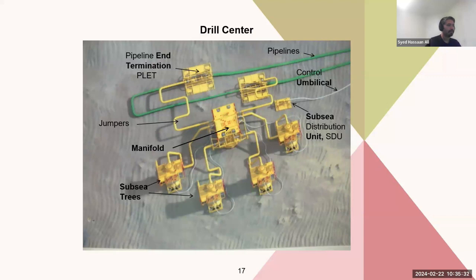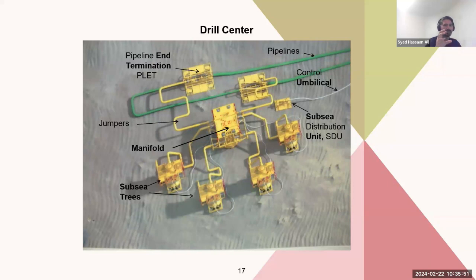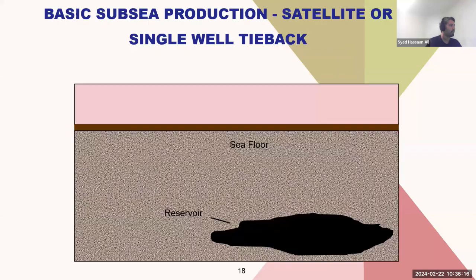The two FLETs are connected with a loop that allows what we call pigging operations. Pigging involves a contraption installed inside the pipeline that cleans it to prevent buildup of solid sedimentation and corrosion. This animation shows the installation of a basic subsea production system with a satellite or single-well tieback.